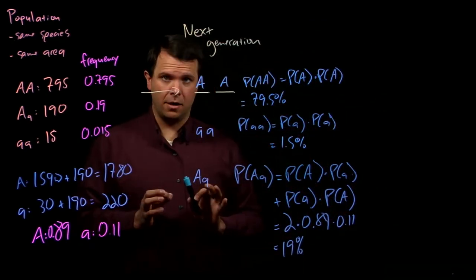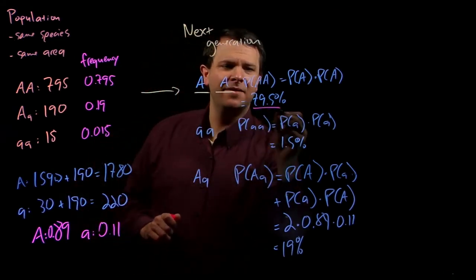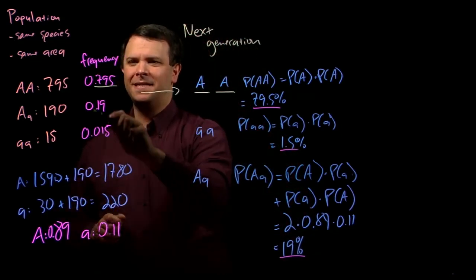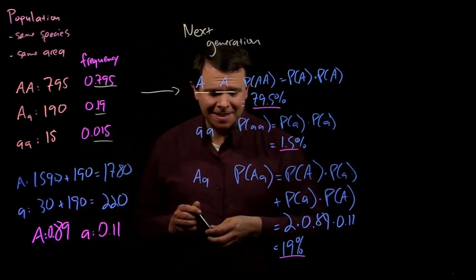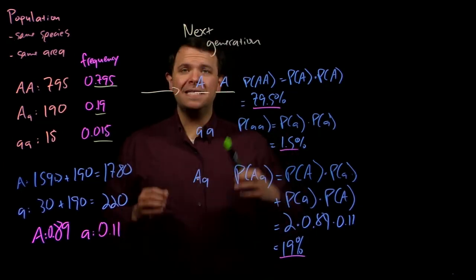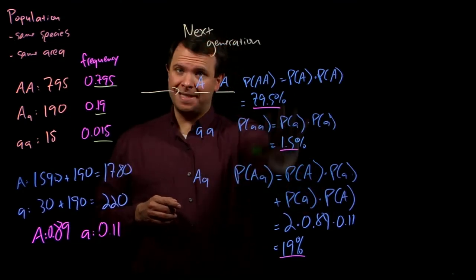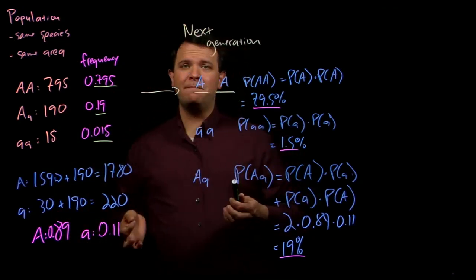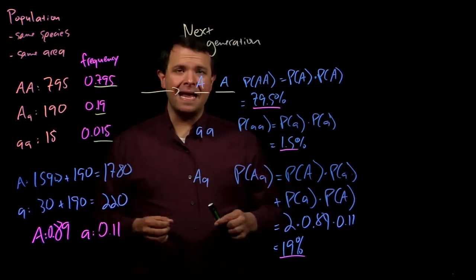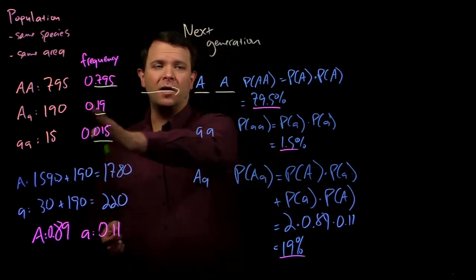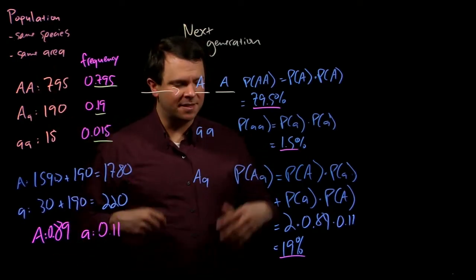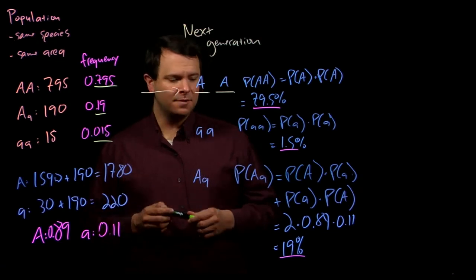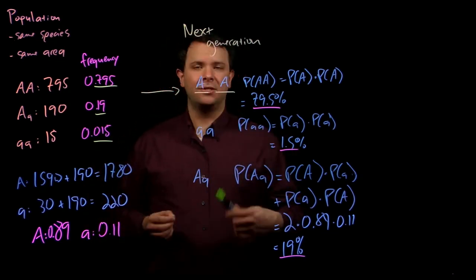Now compare these probabilities — 79.5%, 1.5%, and 19% — to the original probabilities: 79.5%, 1.5%, and 19%. They're the same. Because mating is random, the allele frequency in the second generation is the same as the allele frequency in the first generation. This is the basic insight behind Hardy-Weinberg. We say that a population where, from one generation to the next, the allele frequencies and genotype frequencies aren't changing, is in Hardy-Weinberg equilibrium. Next, we'll see some ways we can put this idea to use.